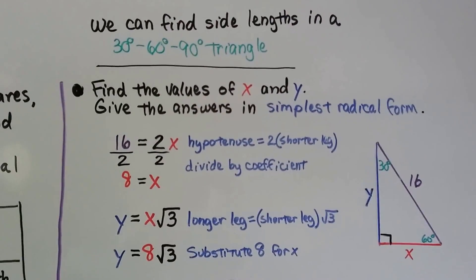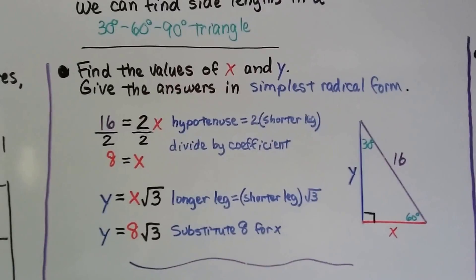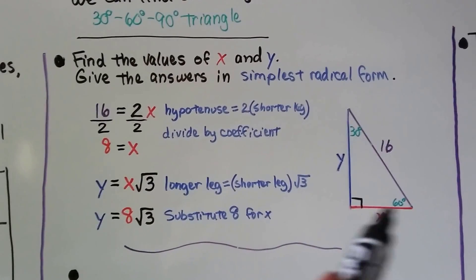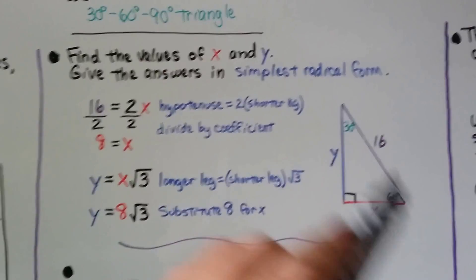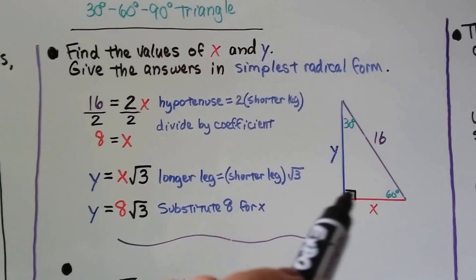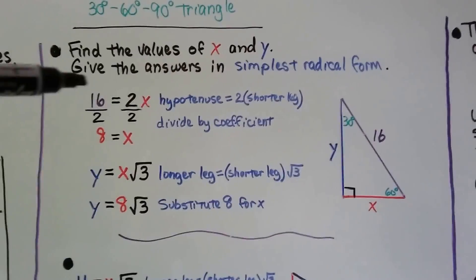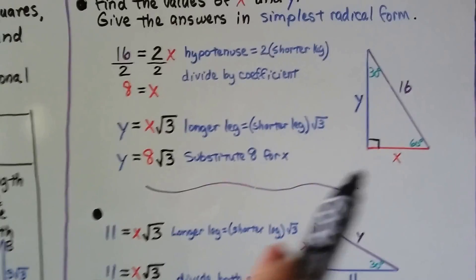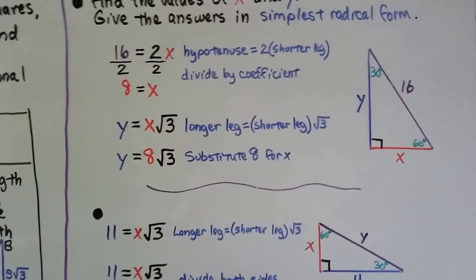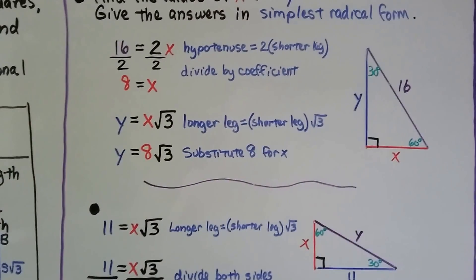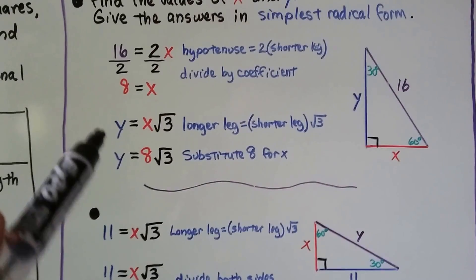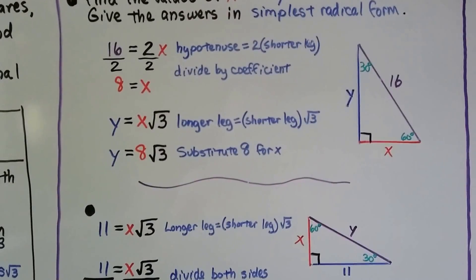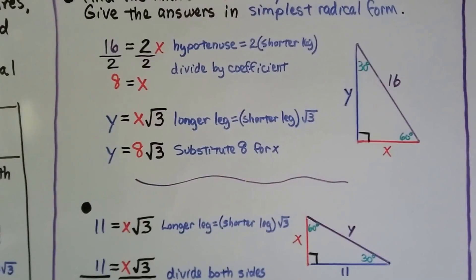We can find the side lengths in a 30-60-90 triangle and give answers in simplest radical form. Looking at the diagram: the shorter leg is x, the longer leg is y, and the hypotenuse is 16. Since the hypotenuse equals 2 times the shorter leg, we have 16 = 2x, so x = 8. Then the longer leg y equals the shorter leg times the square root of 3, so y = 8√3.